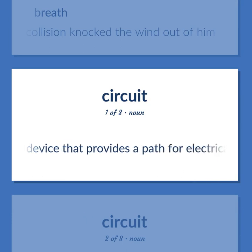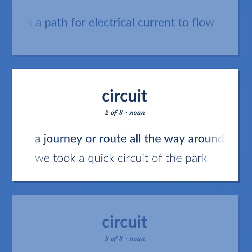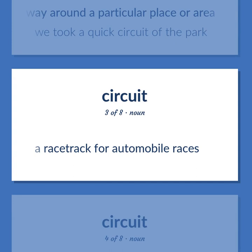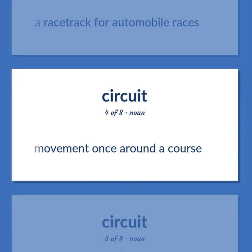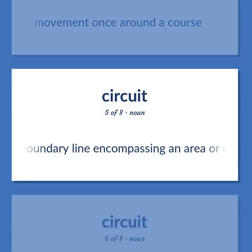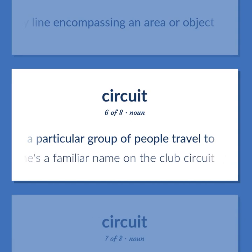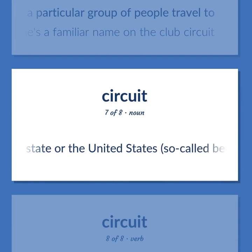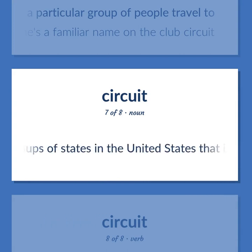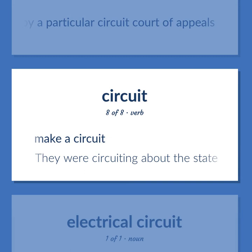CIRCUIT: An electrical device that provides a path for electrical current to flow. A journey or route all the way around a particular place or area — we took a quick circuit of the park. A racetrack for automobile races. Movement once around a course. The boundary line encompassing an area or object. An established itinerary of venues or events that a particular group of people travel to — she's a familiar name on the club circuit. Make a circuit — they were circuiting about the state.